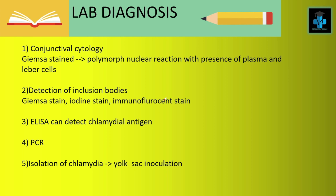Now let's move on to the lab diagnosis. First we have conjunctival cytology — using Giemsa stain, we can appreciate polymorphonuclear reaction with presence of plasma and Leber cells. Next is the detection of inclusion bodies, which can be done with the help of Giemsa stain, iodine stain, or immunofluorescent stain. Other lab diagnoses include ELISA, through which we can detect the chlamydial antigen, PCR can also be done, and we can also isolate the chlamydia using yolk sac inoculation.